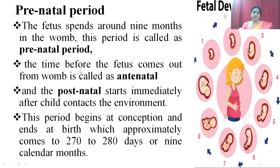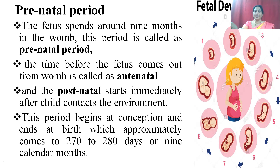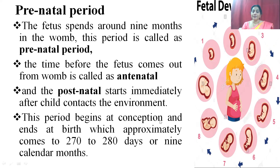The first trimester is the most crucial for the baby's development. During this period, the baby's body structure and organ system will develop. The mother's body also undergoes major changes during the first trimester. The second trimester, from 14 to 26 weeks, is often called the golden period, because many of the unpleasant effects of early pregnancy such as vomiting and dizziness disappear. Somewhere between 16 to 20 weeks, the mother feels the baby's first fluttering movements. The third trimester, from 27 to 40 weeks, is the final stage of pregnancy. Mothers may experience symptoms including shortness of breath, hemorrhoids, urinary incontinence, varicose veins, and sleeping problems.